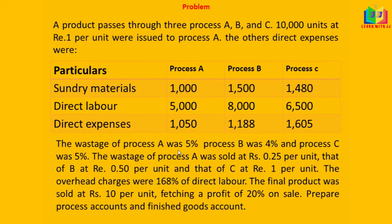The wastage of process A was 5%, process B was 4%, and process C was 5%. The wastage of process A was sold at 25 paise per unit, that of process B at 50 paise per unit, and that of process C at rupee 1 per unit.